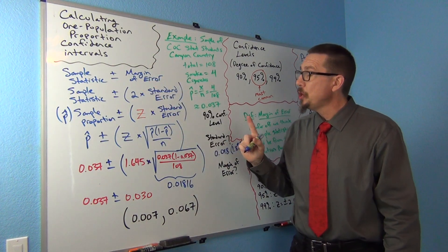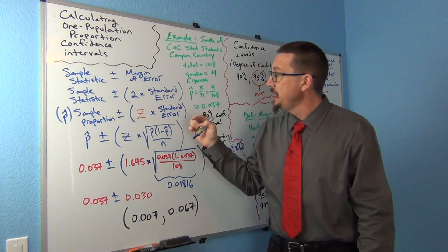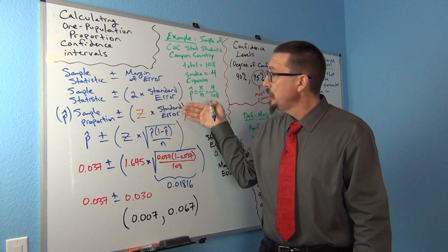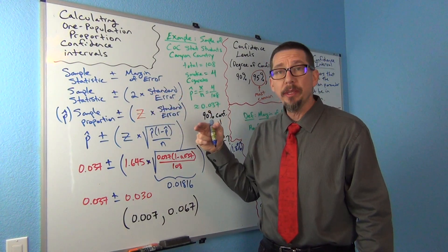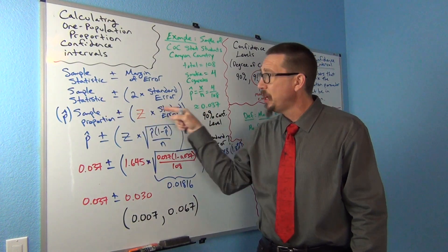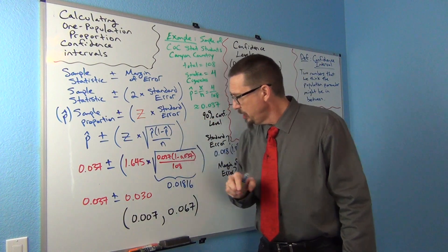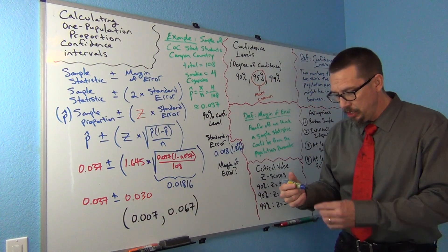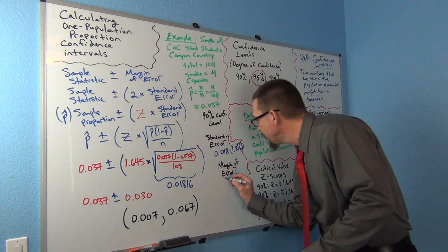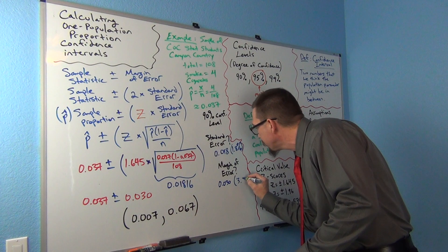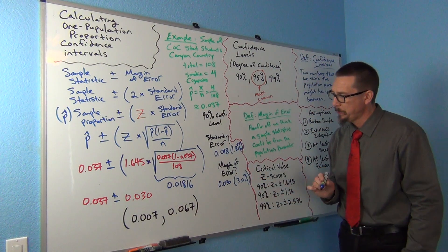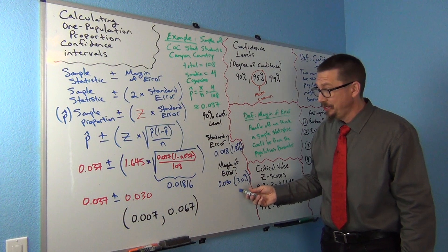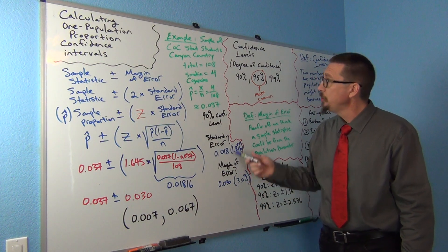Now I'll multiply 1.645 times the standard error, which gives the estimate of the margin of error. The key formula here is: sample statistic plus or minus the margin of error, which equals the critical value times the standard error. Multiplying these together, we get a margin of error of .030 — roughly about a 3% margin of error. Not surprising we have a large margin of error with such a small sample, since the smaller the sample size, the bigger the margin of error.